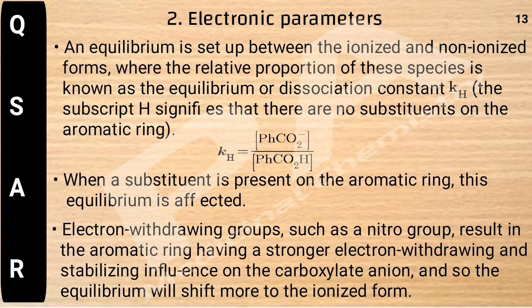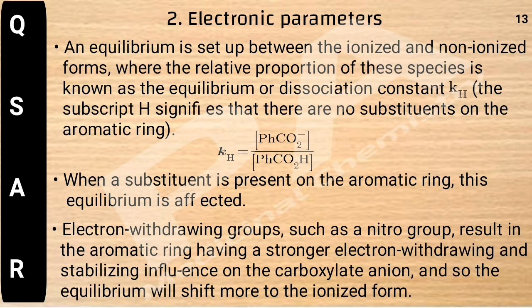An equilibrium is set up between the ionized and unionized forms, where the relative proportion of these species is known as the equilibrium constant or dissociation constant, represented as kH. The subscript H indicates there are no substituents on the aromatic ring, so the formula is: kH equals concentration of ionized form divided by concentration of unionized form.